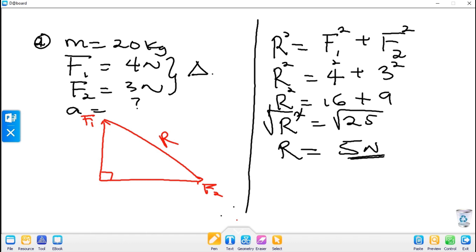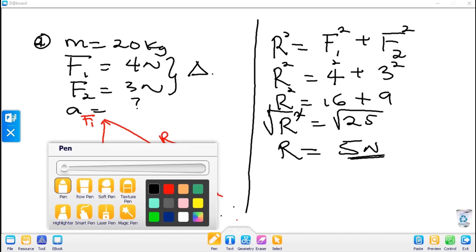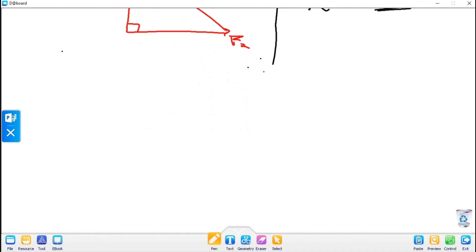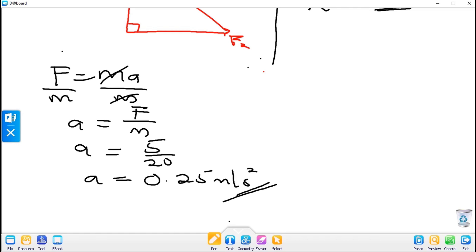Since we have obtained our resultant force to be 5 Newton, let us obtain our acceleration. Recall that F equals ma. Making a the subject, we divide both sides by m. Our a becomes F over m. a equals 5 over 20, which gives us 0.25 meters per second squared. So this is the acceleration of the body.